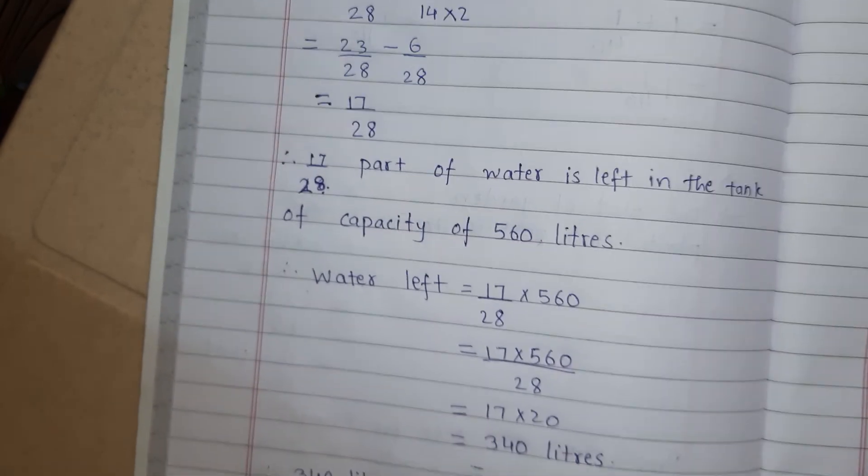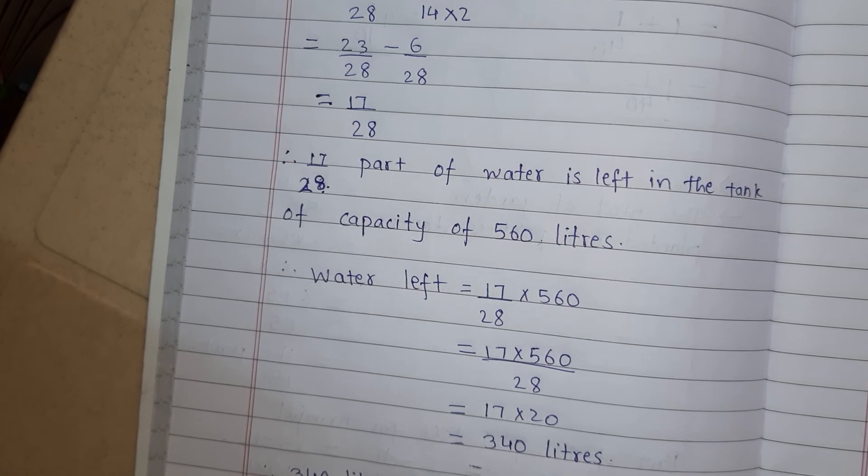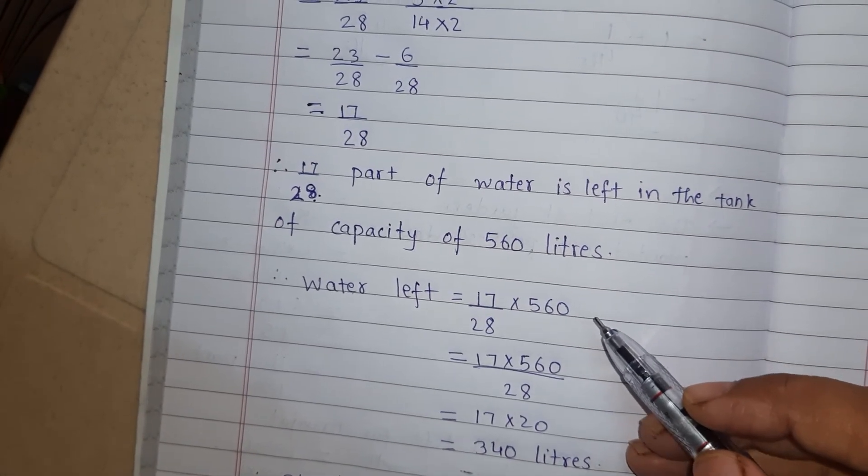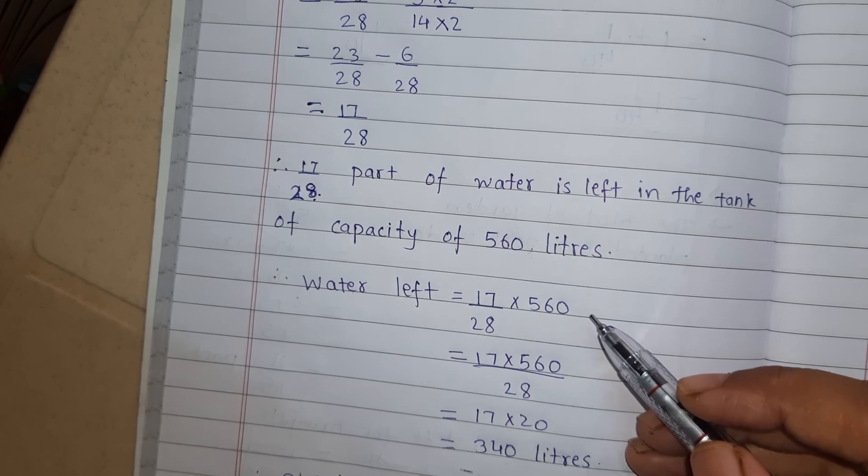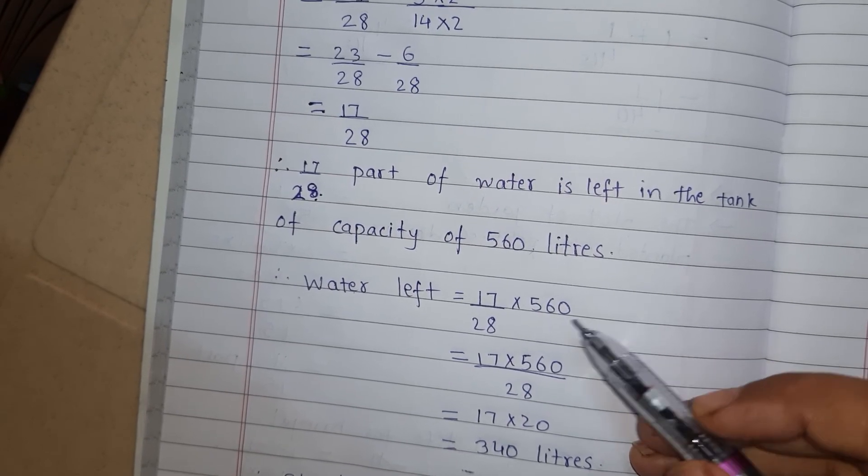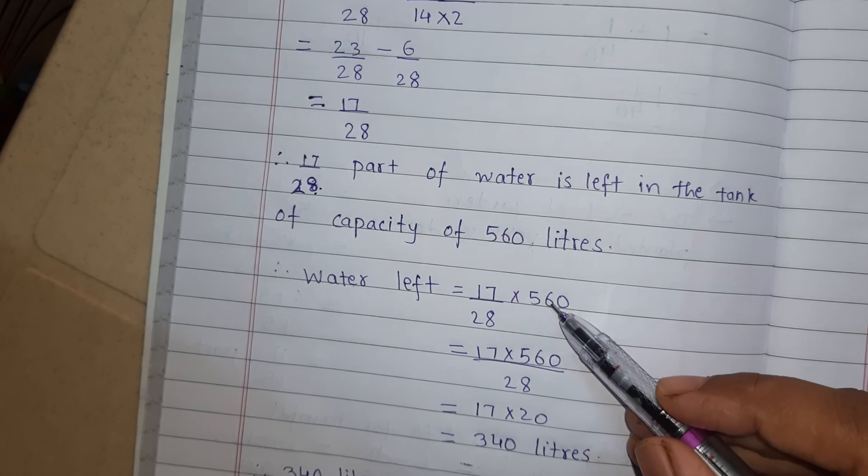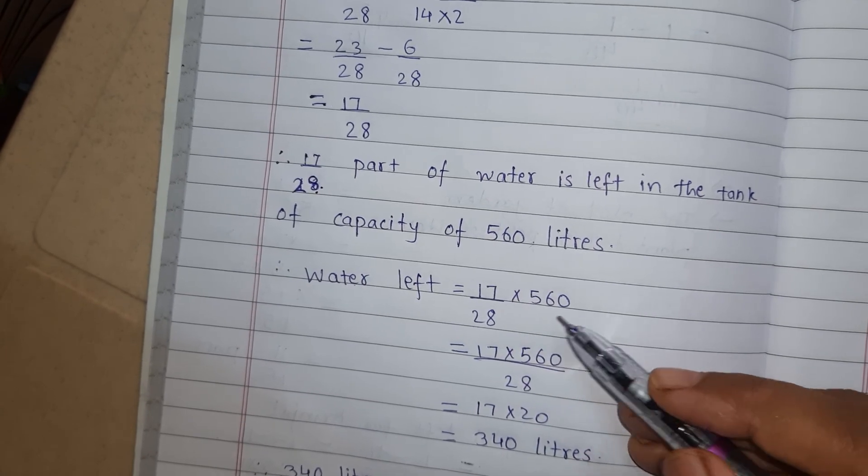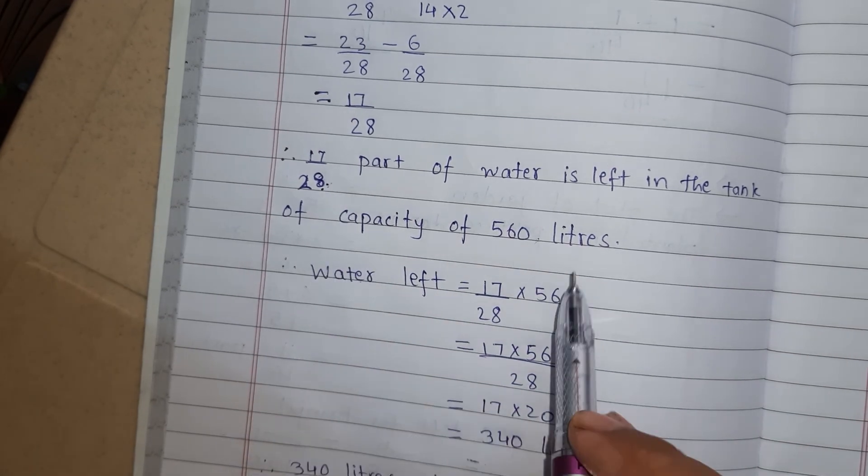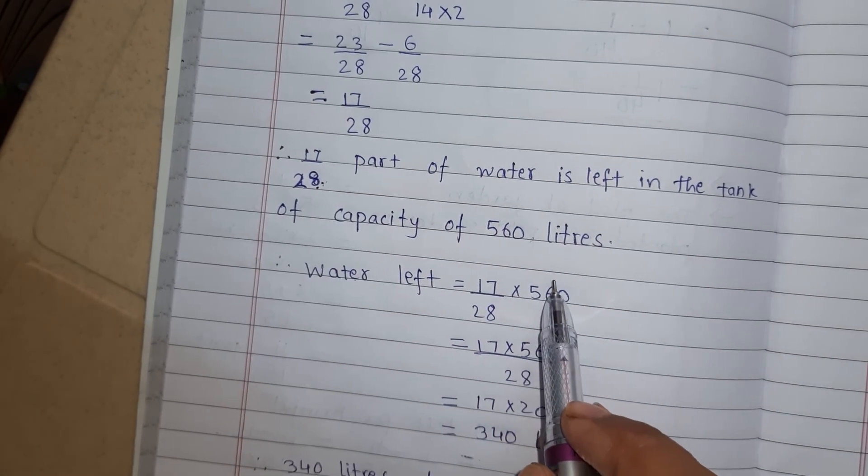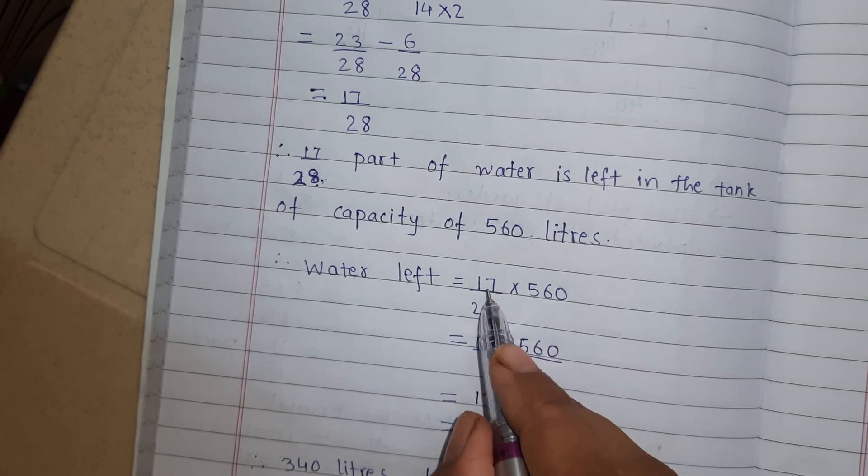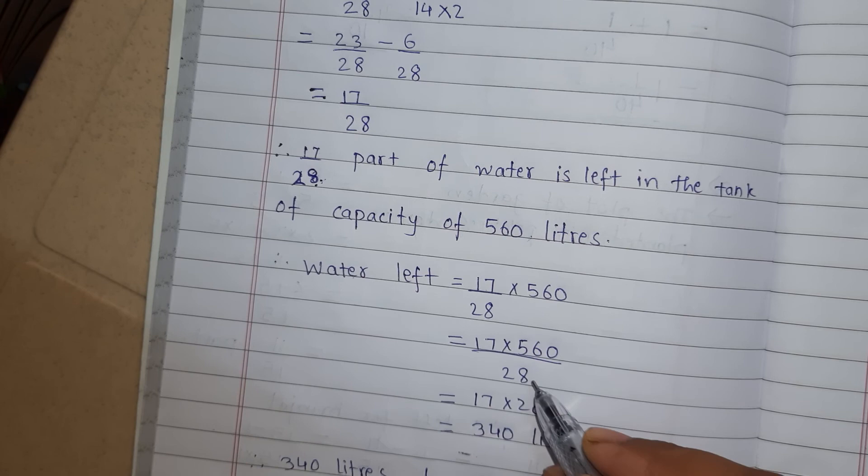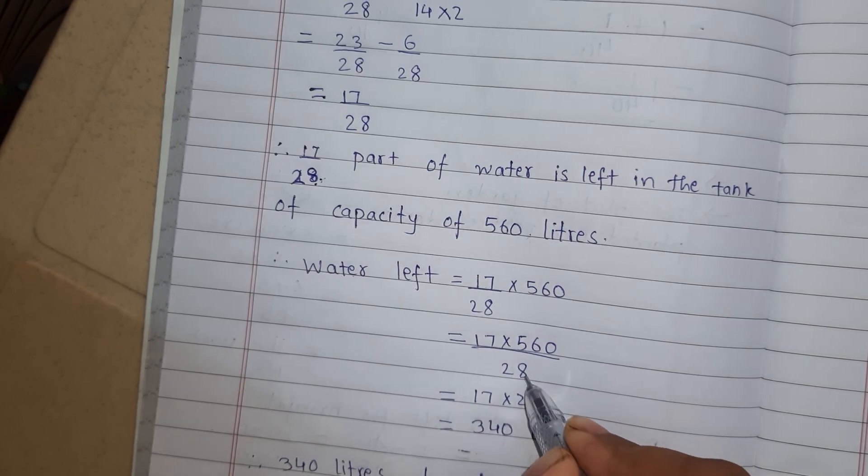Whenever we have to find the fraction of a whole number, we have to do multiplication. This we have studied in the 5th standard also. Okay? Fraction of a whole part. That we have to find by doing multiplication. So 17/28 into 560. Now this we have to multiply the numerators directly. And denominator we will write here. Okay? Now first we will solve this division.